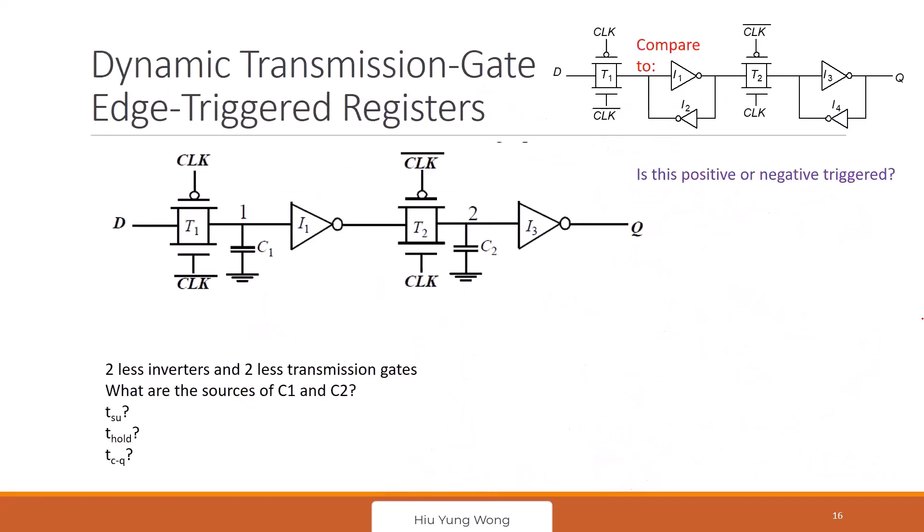Okay, if that's okay, then let's move forward. Now, we will continue to work on this edge trigger, but this time we use the so-called dynamic transmission gates. That is another thing, right?